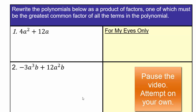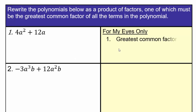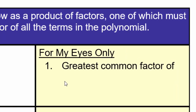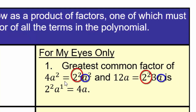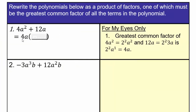Go ahead, pause the video and see what you can do. Assuming you have come back, let's take a look. We know that our greatest common factor of 4a squared and 12a is going to be 4a. We need to rewrite this as 4a times a plus 3, because 4a times a will give me 4a squared, and 4a times positive 3 will give me positive 12a.